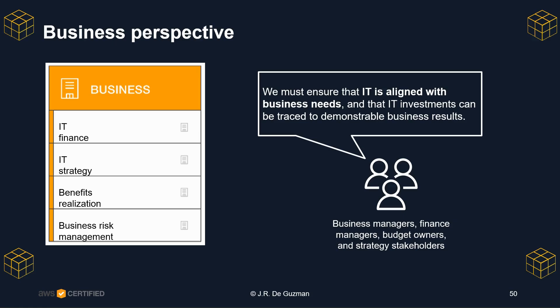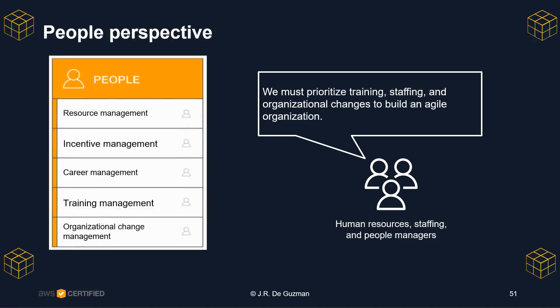Stakeholders from the People perspective — for example, human resources, staffing, and people managers — can use the AWS Cloud Adoption Framework to evaluate organizational structures and roles, new skills and process requirements, and identify gaps. Performing an analysis of needs can help prioritize training, staffing, and organizational changes to build an agile organization.